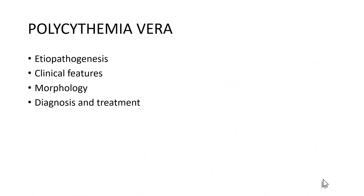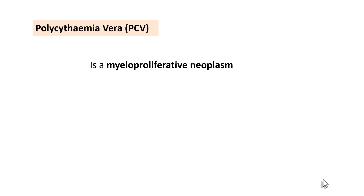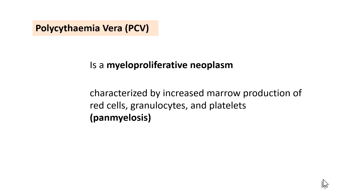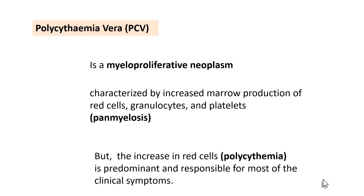In the next 10 to 15 minutes, let us look into the etiopathogenesis, the clinical features, the morphology, diagnosis and treatment of polycythemia vera. Polycythemia vera by definition is a myeloproliferative neoplasm along with chronic myeloid leukemia and essential thrombocytosis, which is characterized by increased marrow production of red blood cells, granulocytes and platelets — that's why it is panmyelosis. However, the increase in the red cells, that is polycythemia, is the predominant manifestation and it is responsible for most of the clinical symptoms.